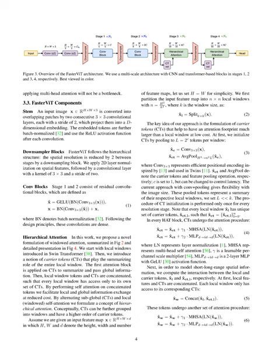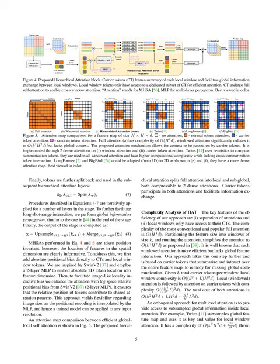Each local window has a unique set of CTs that undergoes an attention procedure in every hierarchical attention transformer, or HAT, block. This procedure involves layer normalization, multi-head self-attention, and a two-layer MLP with a GLU activation function. To capture short- and long-range spatial information, we compute the interaction between local and carrier tokens by concatenating local features and CTs, allowing each local window access only to its corresponding CTs. These tokens then go through another set of attention procedures, and afterward tokens are further separated and used in subsequent hierarchical attention layers.